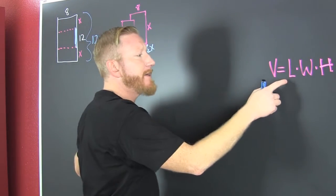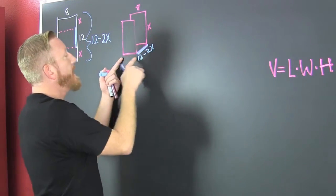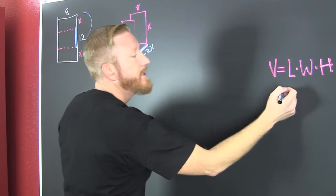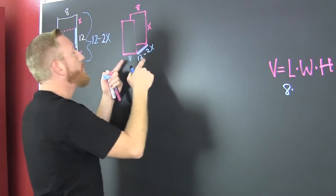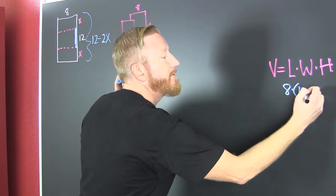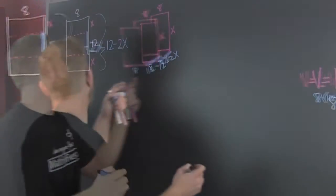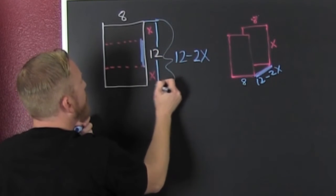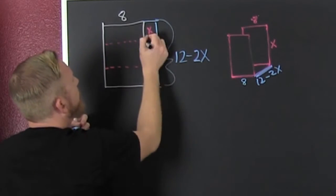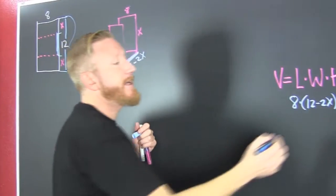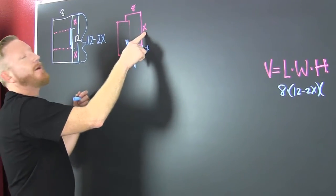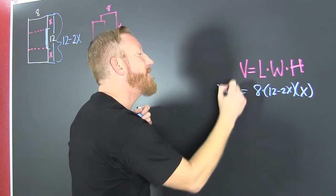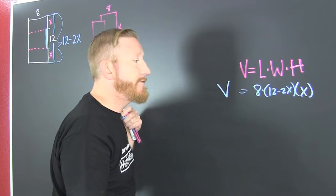Our volume is length times width times height. So our length, that's 8 because this side is 8 and that side is 8. So our length is 8 times our width was 12 minus 2X. That came from this blue piece right here. The entire length from here to here was 12, and then we cut off an X and we cut off another X. So we cut off two X's. And then our height, we've labeled it X. So now we have a function for the volume of our file.